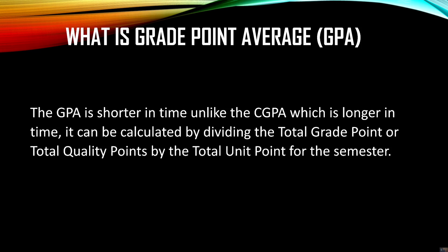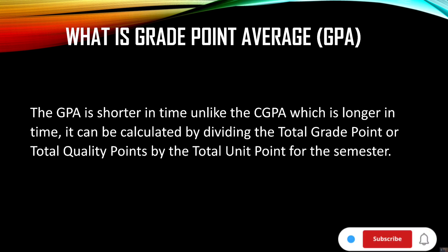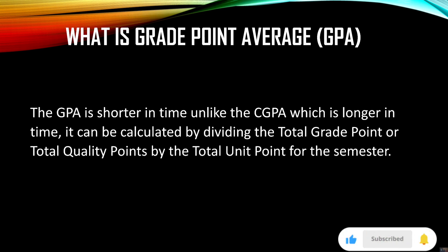The GPA is shorter in time compared to the CGPA, which is longer in time. It can be calculated by dividing the total grade point — also called total quality point — by the total unit points of the semester. The GPA covers just a single semester, while the CGPA is a combination of two semesters, which makes a section. For example, if you are offering 10 courses in a semester you add all the unit courses together and divide by the total grade points for that semester.